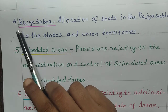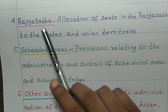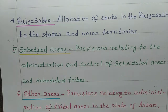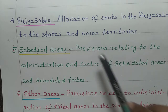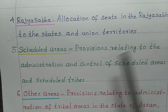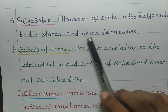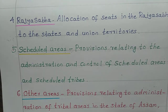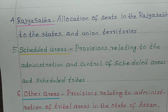Fourth schedule: keyword is Rajya Sabha. This schedule deals with the allocation of seats in the Rajya Sabha to the states and to the union territories.